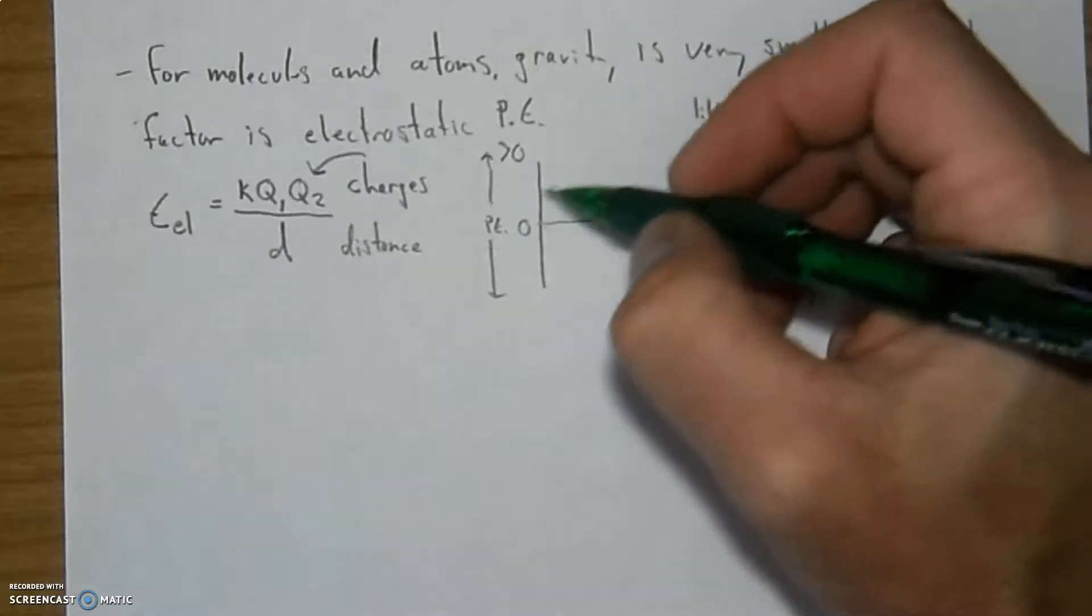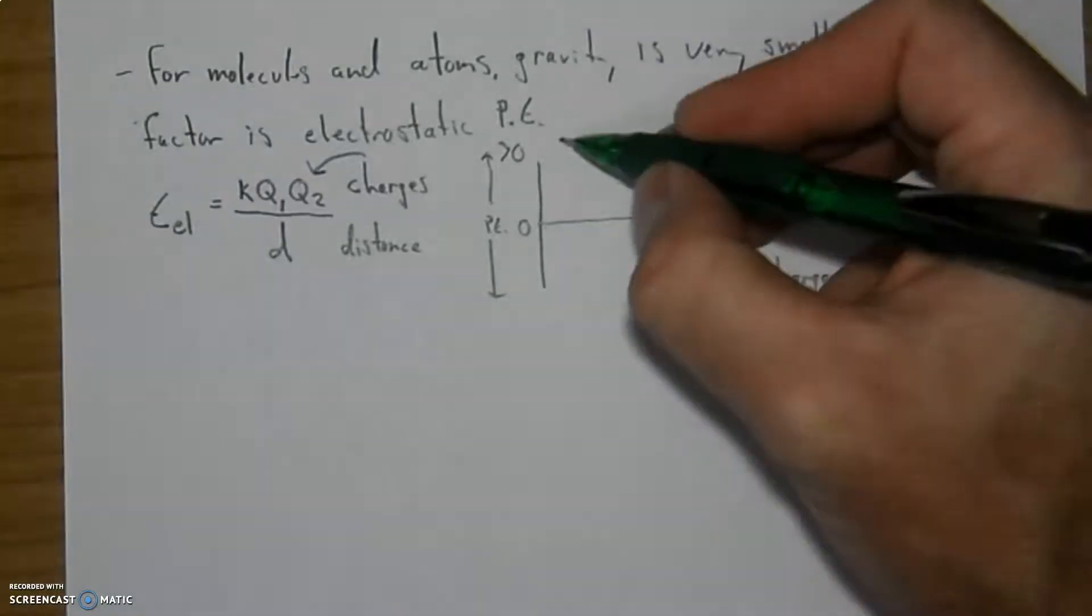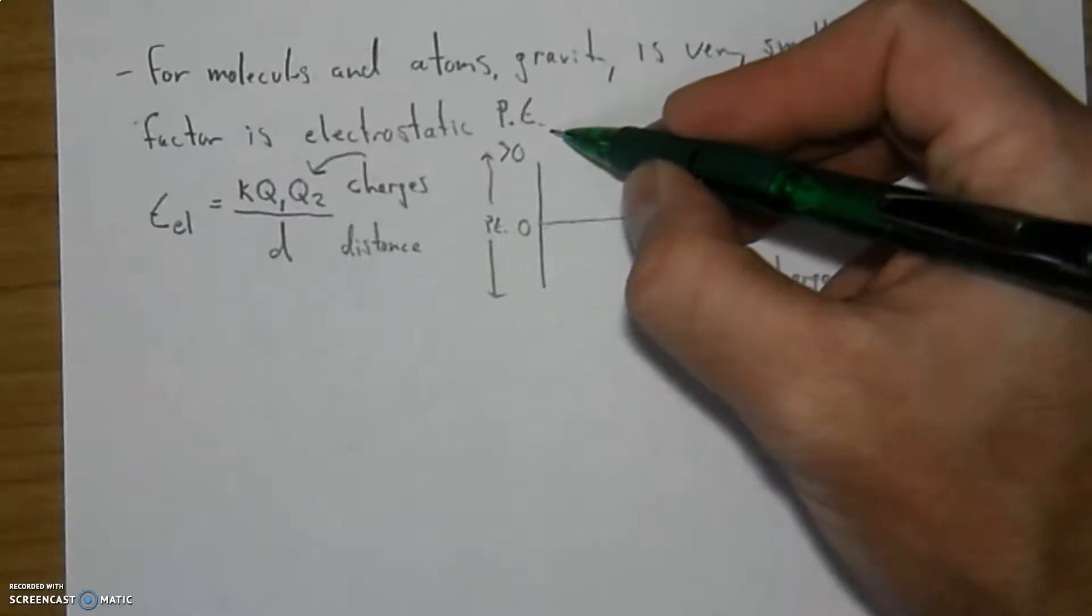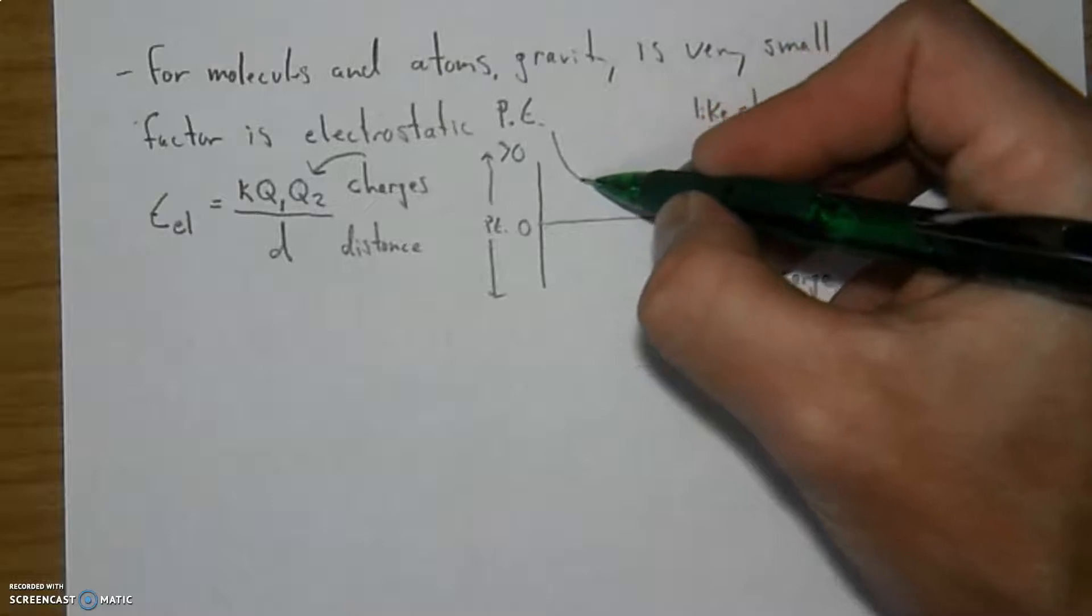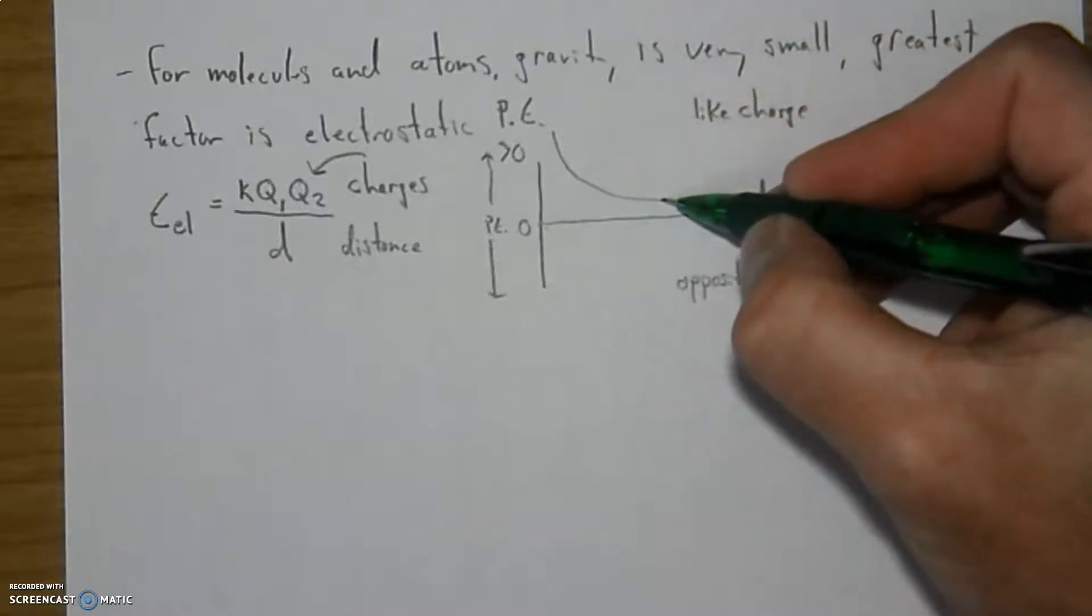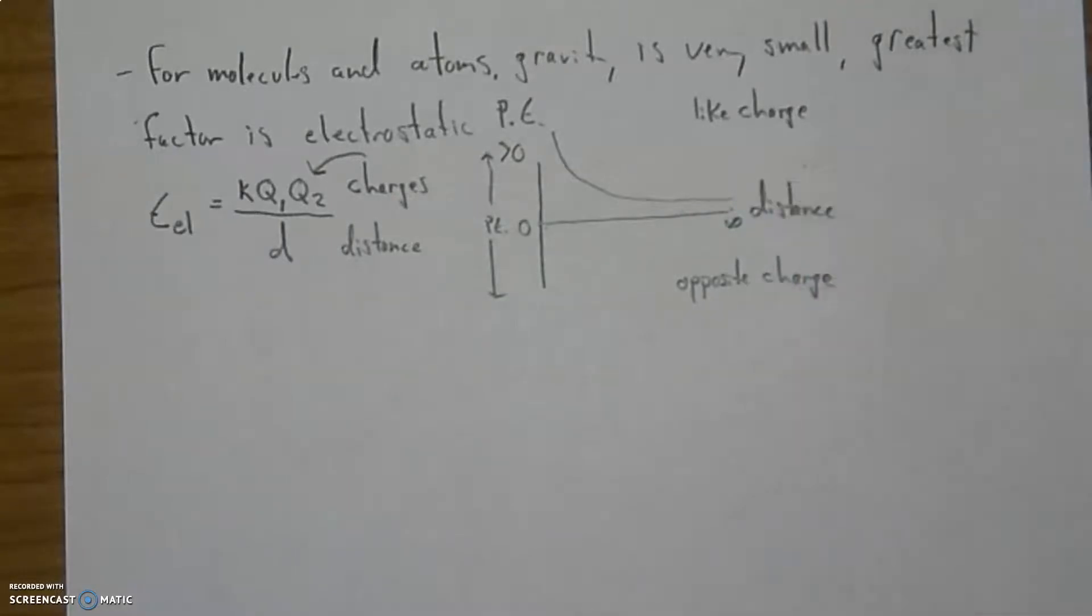When you push them together, you're putting energy into something called the system. So, it's really high energy when they are close together. And as they get further and further away from each other, that resistance goes down. And eventually it goes down to something close to zero as it approaches infinity.